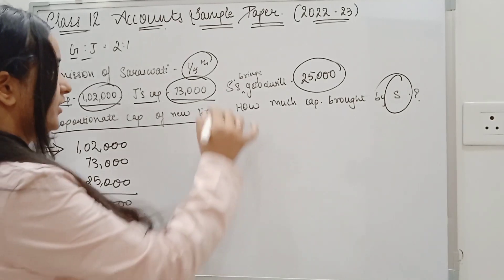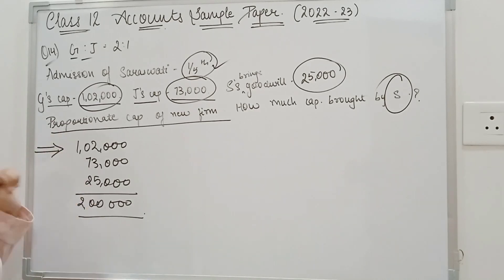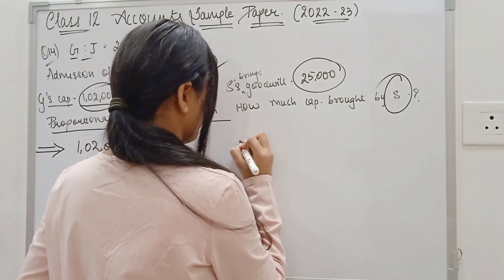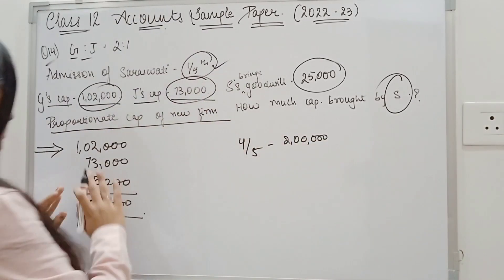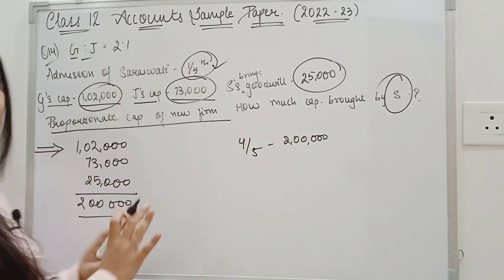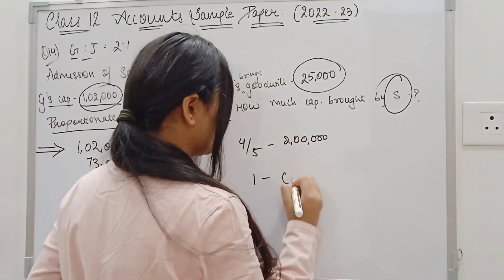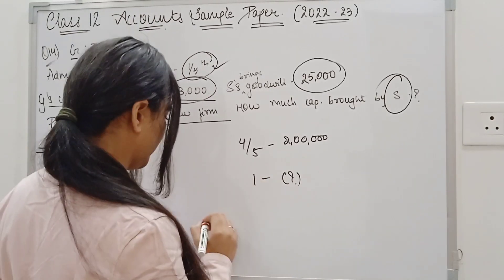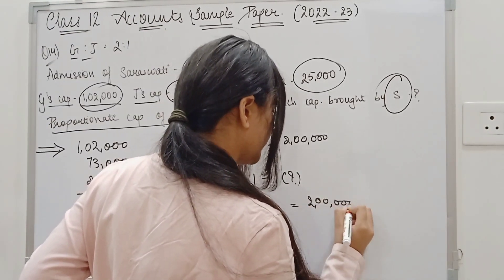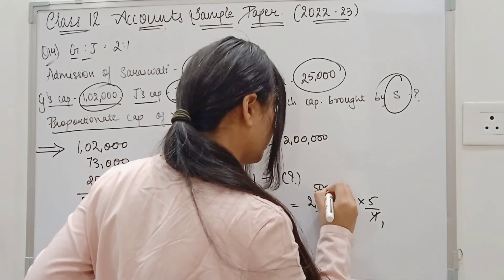Now, the 2 lakh, we have the capital. Now, on this basis, we have to tell that the 1/5th share is Saraswati. The rest of the 4/5th share, who will be? The two partners will be. Here, the 4/5th share is the 2 lakh. That is, the two partners G and J. If the total capital is 2 lakh, how much capital will be the total? We will get out of this. 2 lakh into 5 divided by 4, which is 2,50,000.